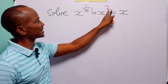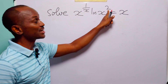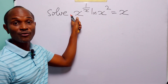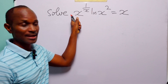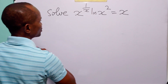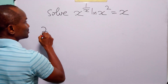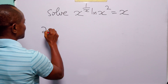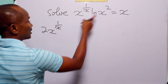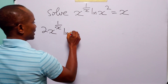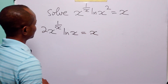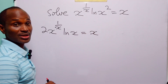The rule says that we can bring down 2 — the exponent of x — to the front of the log term to become a multiplier. When we apply this rule, this equation becomes 2 times x to the power 1 over x, multiplied by ln x, is equal to x.